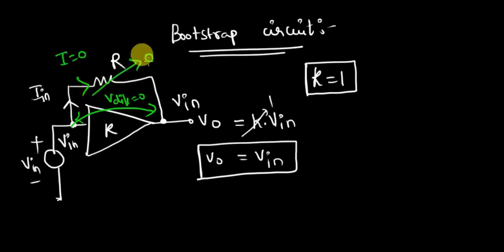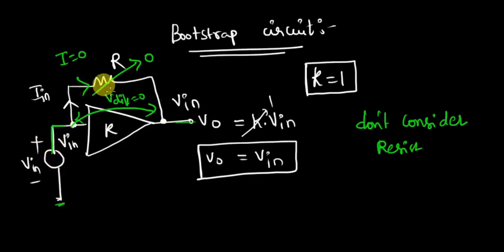Which indicates that don't consider resistance. It's like the input is going like this and the output is coming like this. Even though the resistance is present,